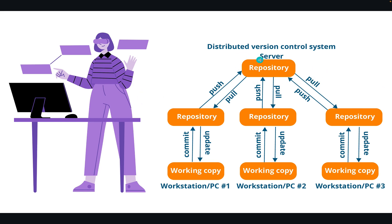This diagram shows a distributed version control system. On our server we have a single repository where all code is placed. Different engineers and developers pull the code, make changes, and commit those changes. In the workstation, we can update and test the working copy, push it to the staging area, and then push it to the main repository. If the working copy is lost, it can be pulled again from the main server.